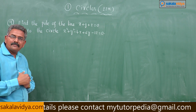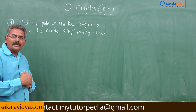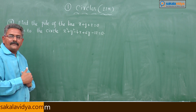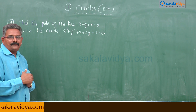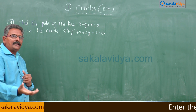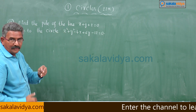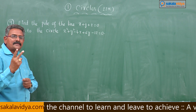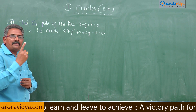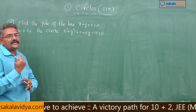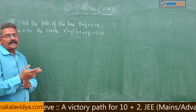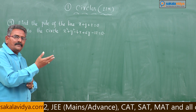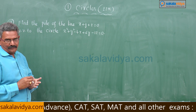The equation of the polar is S₁ equals 0. Let us find the equation of the polar of x₁ comma y₁ with respect to the circle. After that, the equation of the polar and the given equation represent coincident lines. If two linear equations represent coincident lines, we know that a₁/a₂ equals b₁/b₂ equals c₁/c₂. With that condition we can find x₁ and y₁, and thus determine the pole.